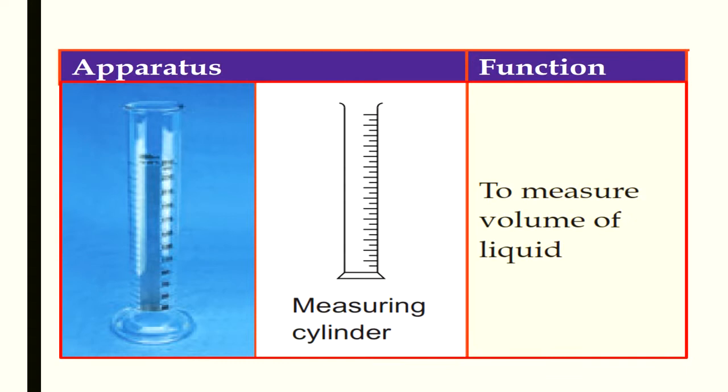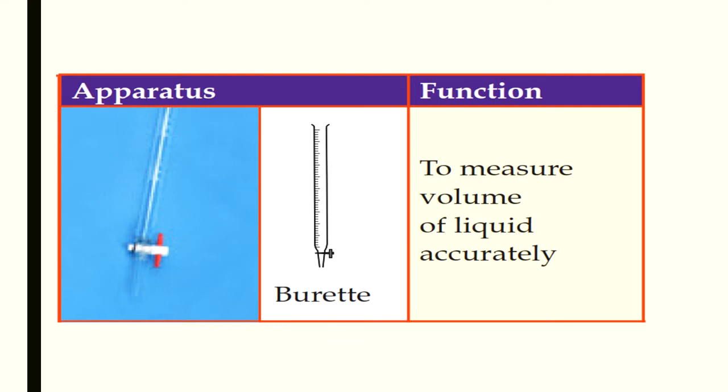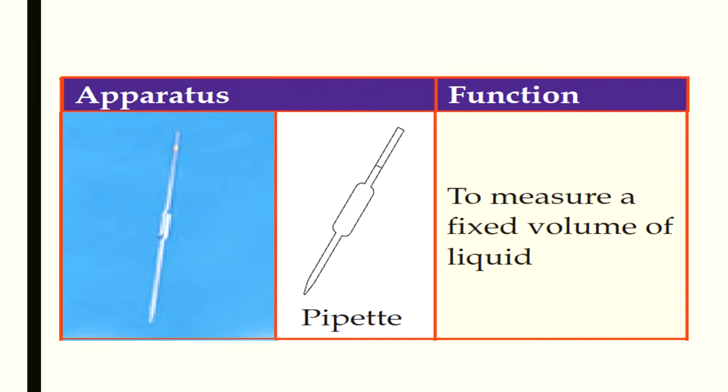Measuring cylinder - to measure the volume of liquid. Burette - to measure volume of liquid accurately. Pipette - to measure the fixed volume of liquid.